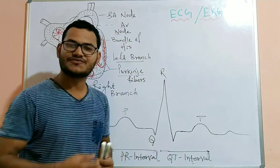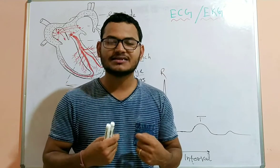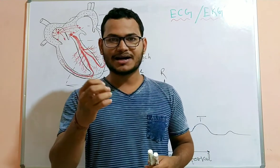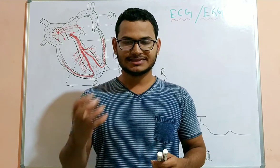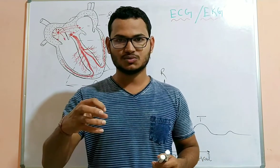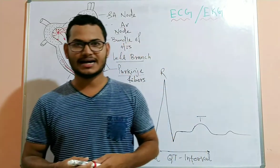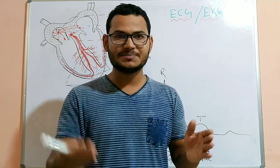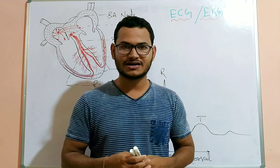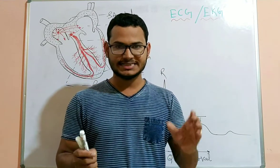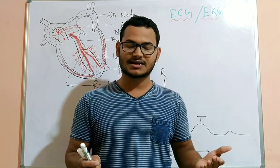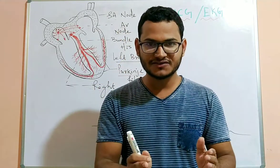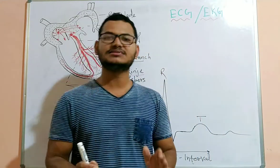These electrical changes in the myocardium can be detected on the surface of our skin. Electrodes are placed on different places on the surface of the body and connected to an instrument known as the electrocardiogram. The electrocardiograph represents the rate and rhythm of heartbeat and shows the sequence of depolarization and repolarization of the atria and ventricles.